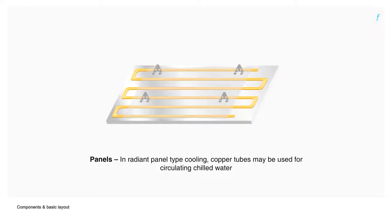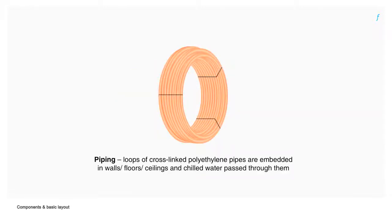Panels: In radiant panel type cooling, copper tubes may be used for circulating chilled water. Piping: Loops of cross-linked polyethylene pipes are embedded in walls, floors, ceilings and chilled water is passed through them.